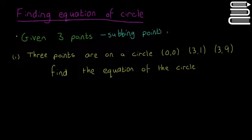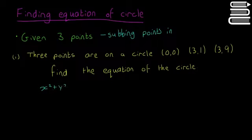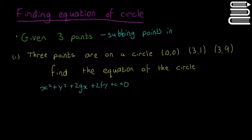We're going to sub each of those points — (0, 0), (3, 1), and (3, 9) — into the equation of a circle to hopefully find it. The general equation of a circle is x² + y² + 2gx + 2fy + c = 0. One by one, we're going to sub these points into the x and y values, find three equations for g, f, and c, solve these, and then we'll have the full equation of our circle.